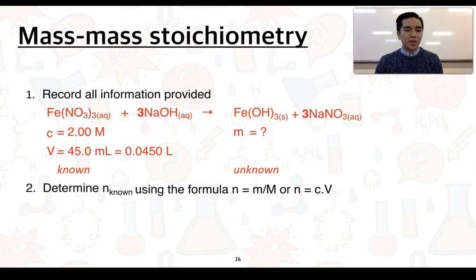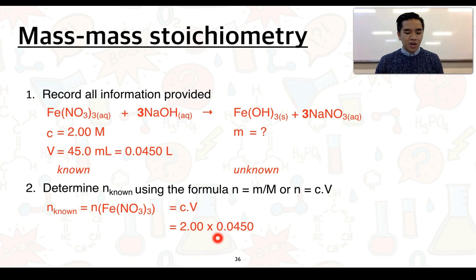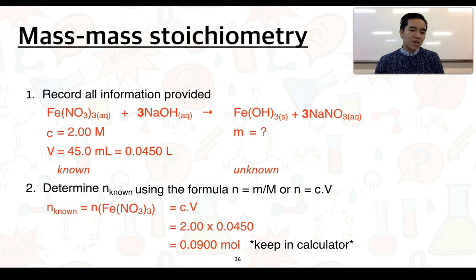Second rule, let's determine the number of moles of our known using one of these two formulae. Now, we're given the concentration and volume, so we need to use this formula here. So, the number of moles of our iron-3 nitrate is equal to C times V. We've got 2.00 times 0.0450, and we've got an answer approximately of 0.0900 moles. Just note to keep this answer in your calculator, and then use it in the following step.